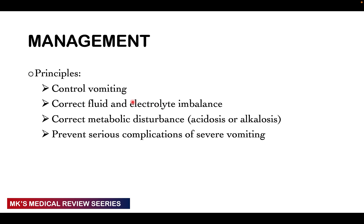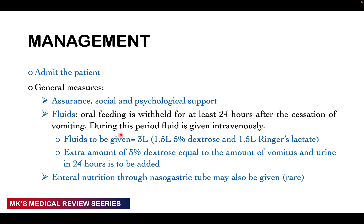In management, you want to control vomiting, control fluid and electrolyte balance, control metabolic disturbances whether acidosis or alkalosis, and prevent serious complications. Admit the patient, reassure her, and offer social and psychological support. Oral fluids are withheld for at least 24 hours after cessation of vomiting. During this period, give IV fluids — generally about 3 liters in 24 hours: 1.5 liters of 5% dextrose and 1.5 liters of Ringer's lactate. The extra amount of 5% dextrose should equal the amount of vomitus and urine output in 24 hours.